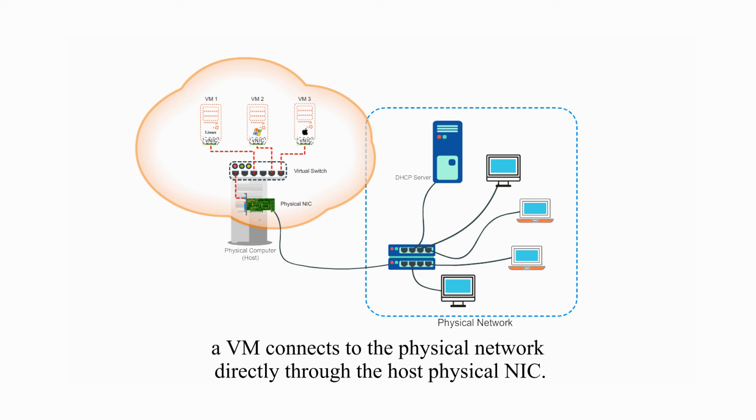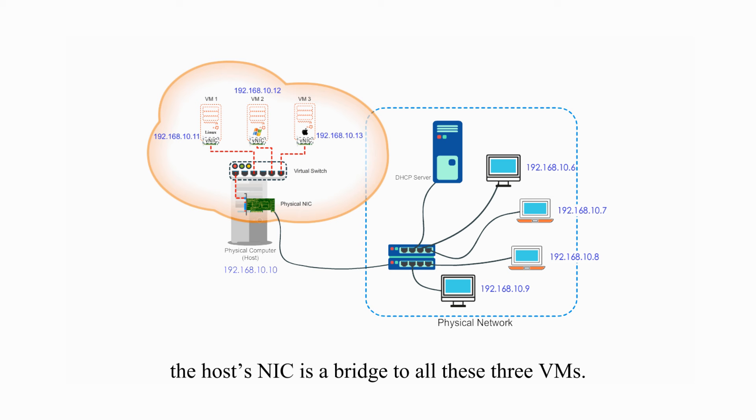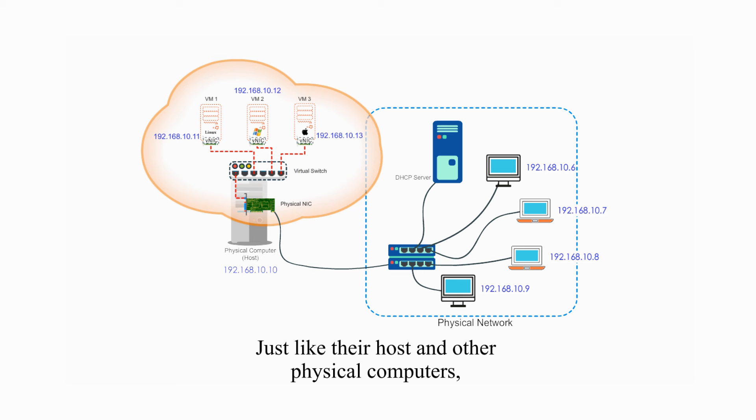In the bridged connection mode, a virtual machine connects to the physical network directly through the host physical NIC. In this mode, the host NIC is a bridge to all these three virtual machines.